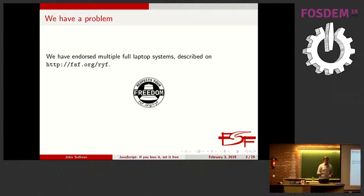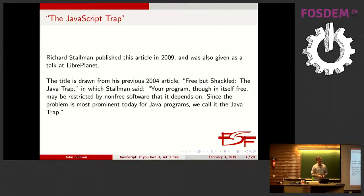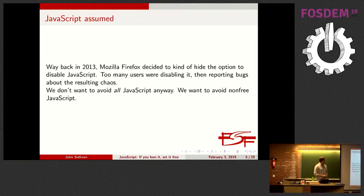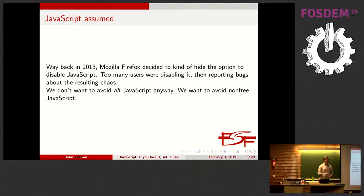Despite the fact that we might run one of these systems, we're still asked to run non-free software every day, and the main way that happens is by proprietary JavaScript being delivered to the user in the web browser. Richard Stallman called this the JavaScript trap in an article he published in 2009, referring back to his 2004 article about the Java trap. JavaScript is basically an assumption on the web now — you can't do much of anything if you turn it off. Mozilla in 2013 removed the option for users to disable JavaScript because users were unchecking that box and then reporting bugs when sites weren't working, not realizing they had disabled JavaScript.